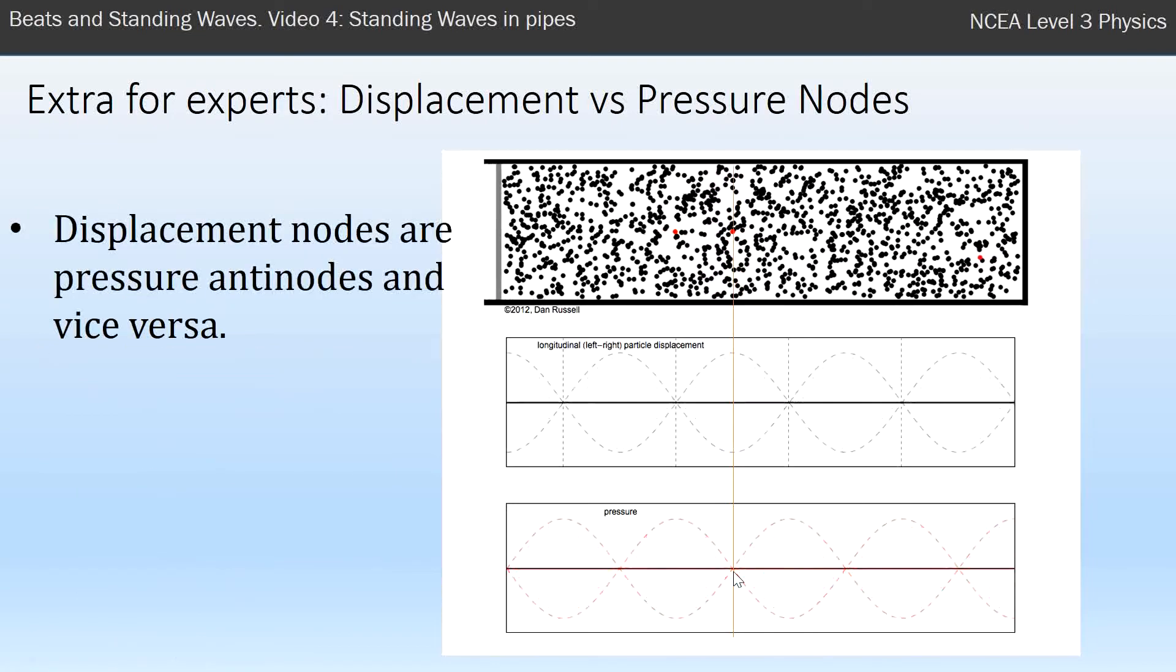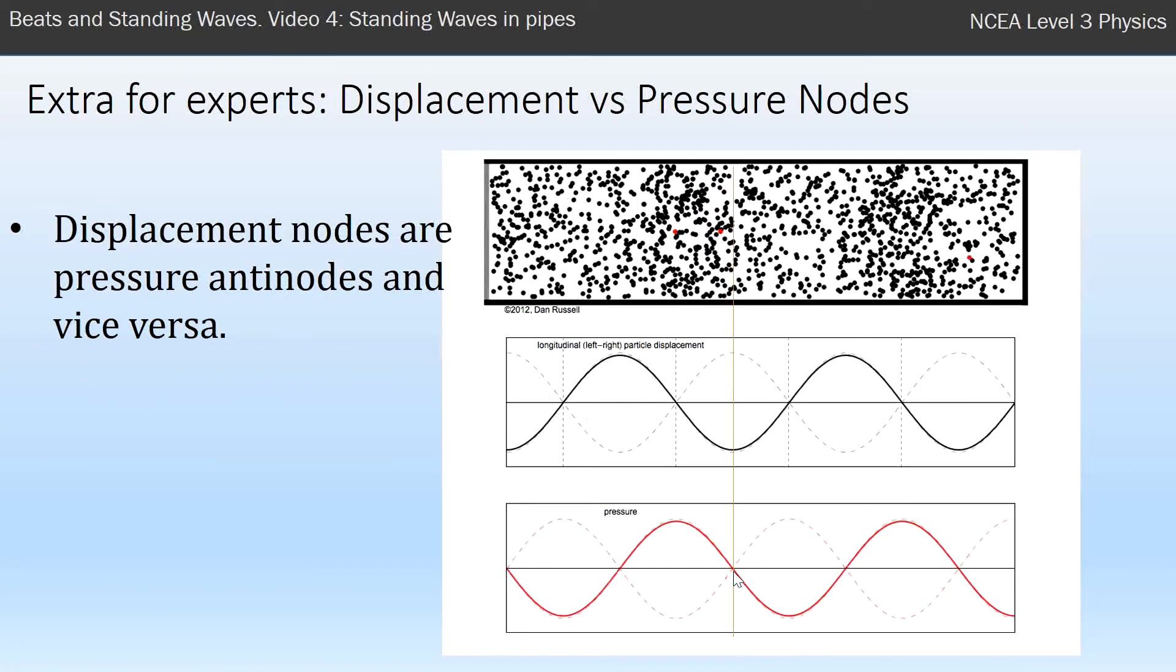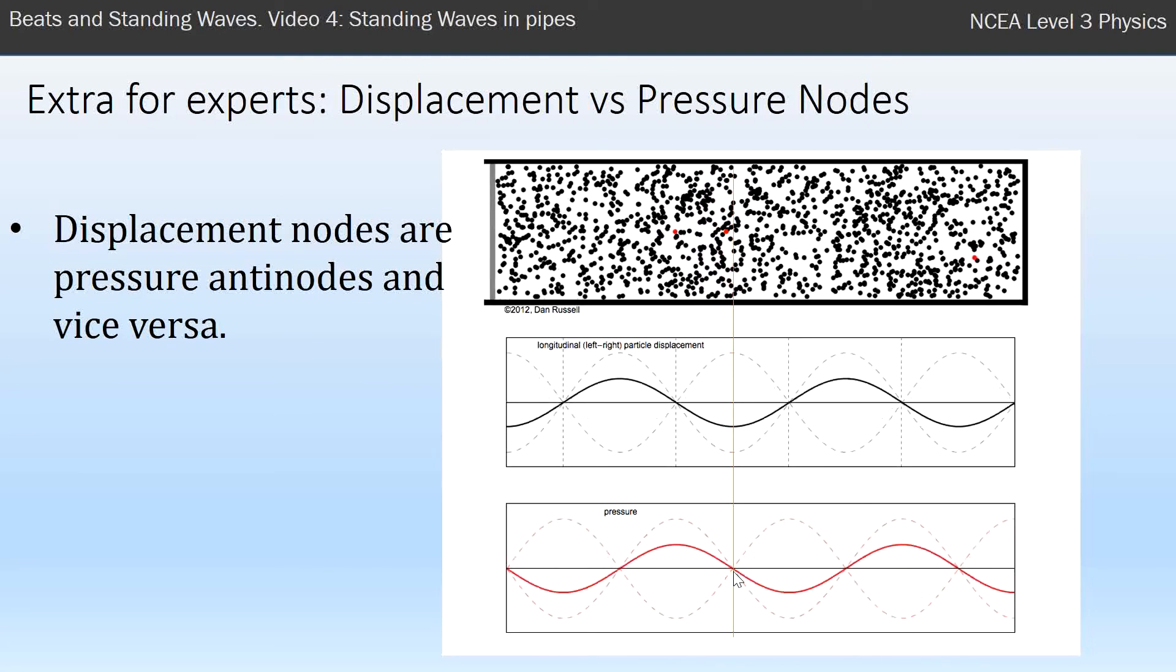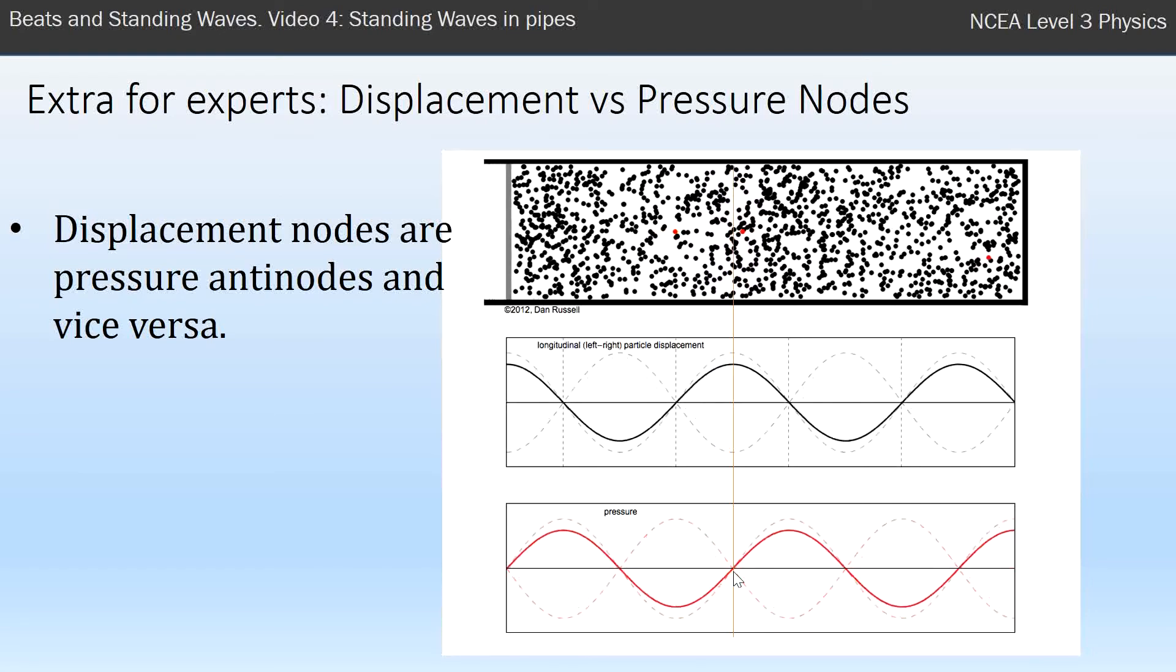Displacement nodes and pressure anti-nodes are equivalent, and vice versa. Pressure nodes are displacement anti-nodes.